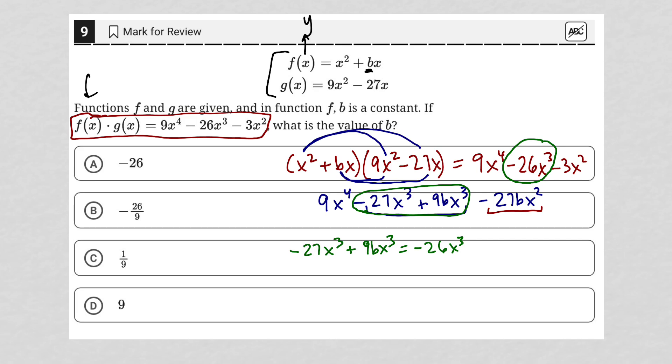Which means I could write negative 27x cubed plus 9bx cubed must equal negative 26x cubed. And I can use that understanding in order to solve for b by adding 27x cubed to both sides of the equation. That's now canceled out on the left-hand side.